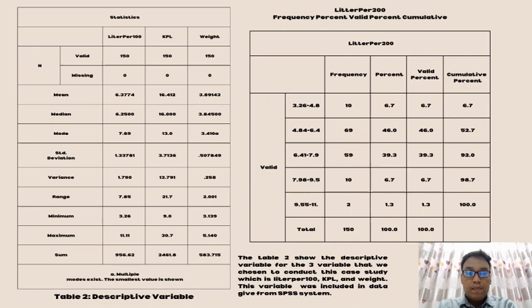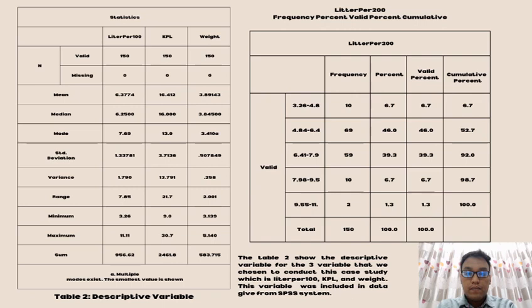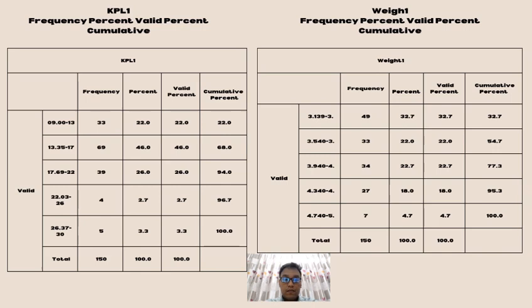The table on the right side is for liter per 200, which we changed from ungrouped data to grouped data. Both tables for KPL 1 and weight show the frequency, percent, valid percent, and cumulative that we changed from ungrouped data to grouped data from SPSS system. Last is the table for brand 1 showing frequency, percent, valid and cumulative from SPSS system.